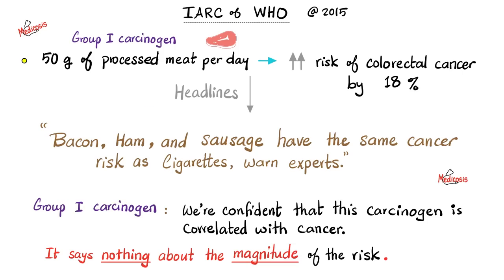They are not the same. Moreover, do you know what a group one carcinogen even means? It means we are confident that this is a carcinogen. But this tells you nothing whatsoever about the magnitude of that risk. Processed meat is not as risky as cigarette smoking — they are not even close. And no, sitting is not the new smoking.